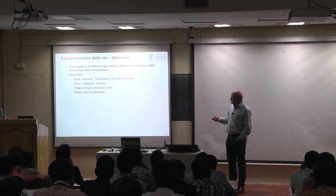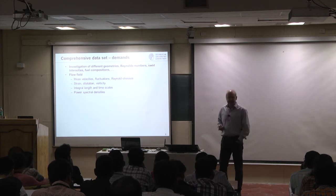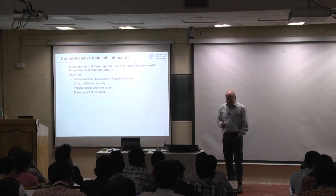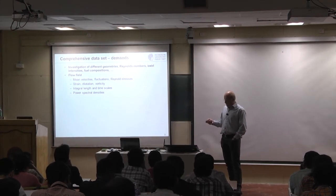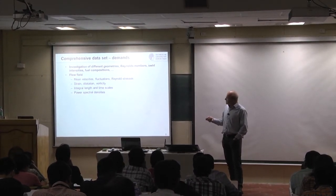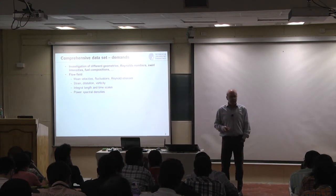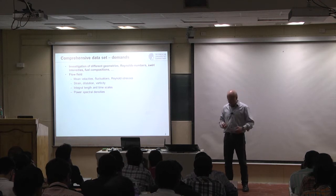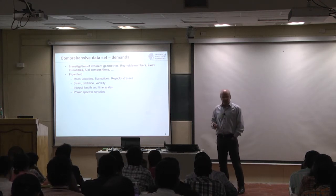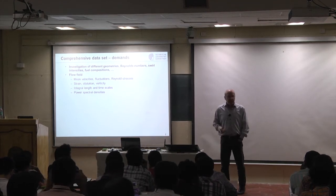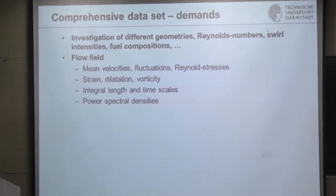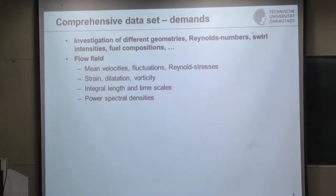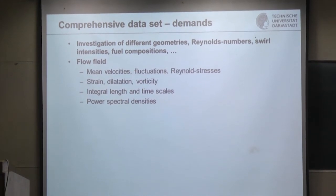It is very important to have an idea about integral lengths and timescales, coming from two-point correlations, which can be done by laser Doppler velocimetry or particle image velocimetry. From the auto-correlation you can obtain, by Fourier transformation, power spectral densities, which give a more complete idea of the turbulent structure. However, these measurements don't happen very often — sometimes you cannot do them, like in IC engines, because you need statistically stationary conditions. Although doable in many turbulent flames, it's not done often because it's very expensive.